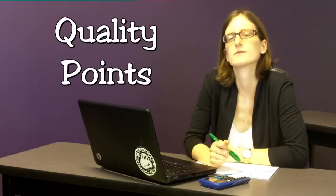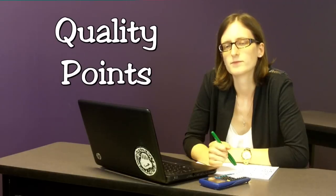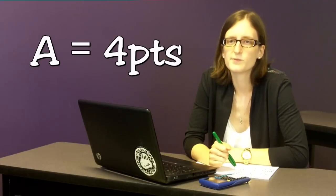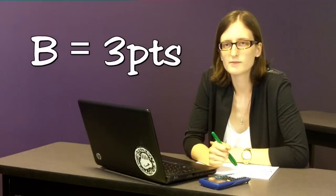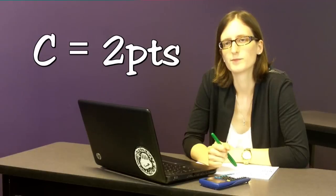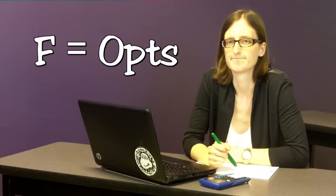Once you have your grades and the number of credits, you have to calculate the quality points for each class. Quality points are based on numbers assigned to letter grades. An A is 4 quality points per credit, a B is 3, a C is 2, a D is 1, and an F is 0.